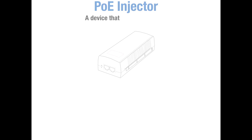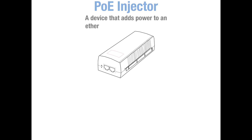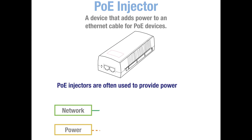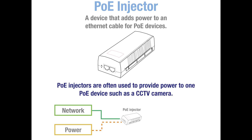Another common network hardware device is a PoE injector. PoE injectors are small devices that are designed to add power to an ethernet cable. They are commonly used to provide power to one device such as a CCTV camera. They are available with a variety of power budgets — some will provide 30 watts or above for cameras that need PoE+.